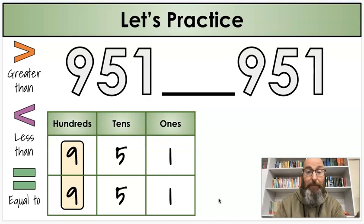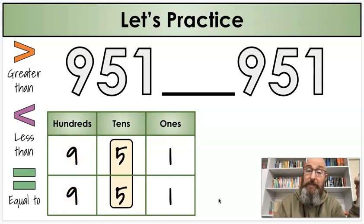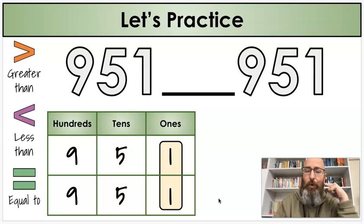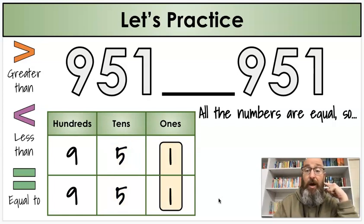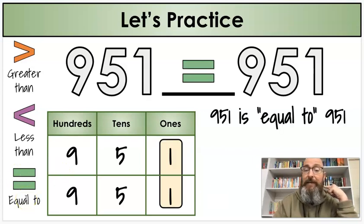900, 900. Same number. I compare my tens. 50, 50. Same number. One and one. Same number. All the numbers are equal. So I'm going to use my equal sign, which means 951 is equal to 951. Is this making sense? I hope so.